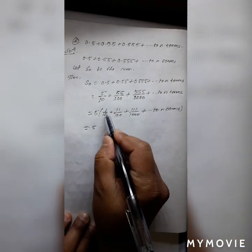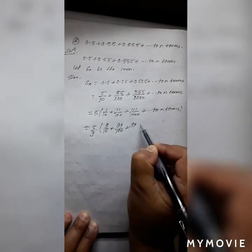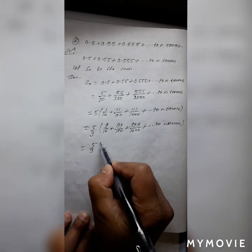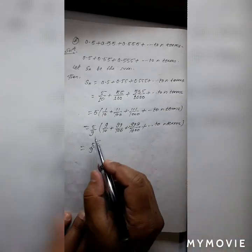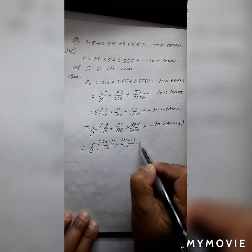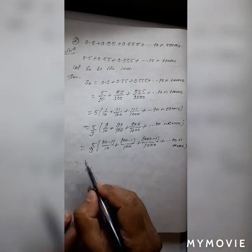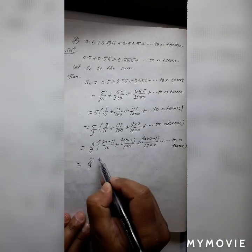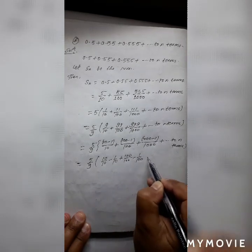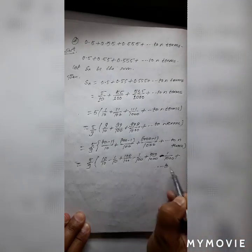Using the same rule as before: 9 by 10 = (10 minus 1) by 10, 99 by 100 = (100 minus 1) by 100, 999 by 1000 = (1000 minus 1) by 1000, up to n terms. Now separate the terms: 10 by 10 minus 1 by 10, plus 100 by 100 minus 1 by 100, plus 1000 by 1000 minus 1 by 1000, up to n terms.